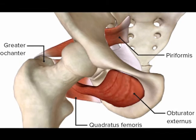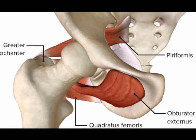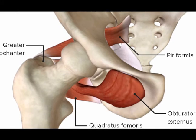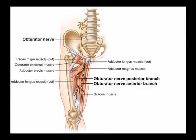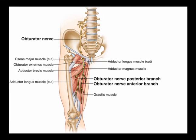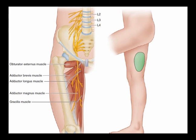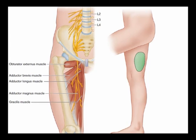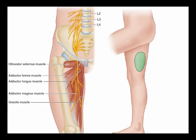The insertion is the posterior aspect of the greater trochanter. The innervation is the obturator nerve from vertebral levels L2, L3, and L4, and the concentric actions of the obturator externus muscle are hip adduction and hip external rotation.